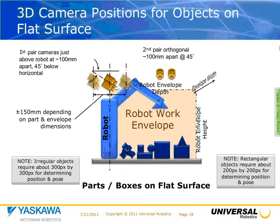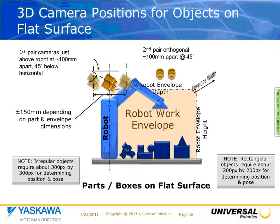Your parts type impacts your overall vision system. Irregular objects require about 300 by 300 pixels for determining position and pose — the object needs at least 300 pixels on it in X and Y to ascertain position and pose, depending on complexity. However, if it's a rectangular object with simple geometry, like a cardboard box, you can go down to around 200 pixels, which means you don't need quite as good camera optics.